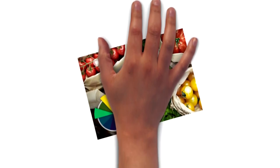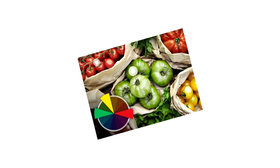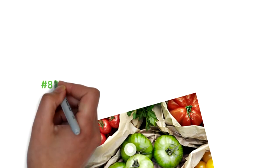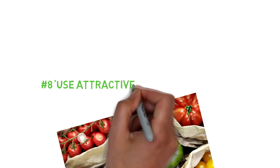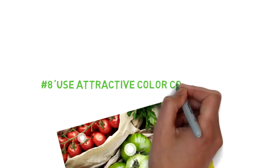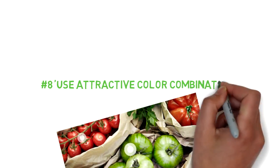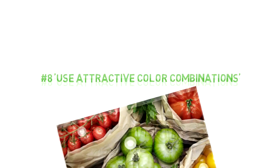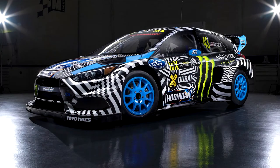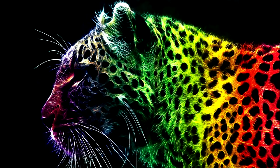Number eight: use attractive color combinations. Use a color wheel to create interesting color combinations. Choose colors on opposite sides of the wheel, or try warm and cool versions of the same color.